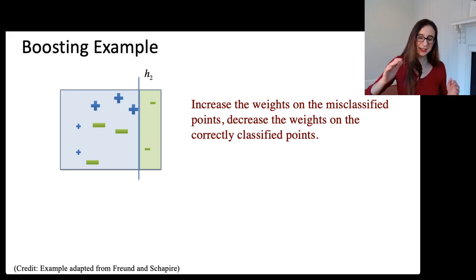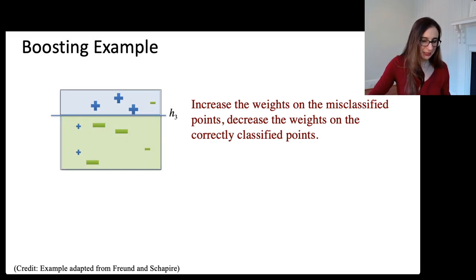So then, we again, decrease the weights on all the points we got correct, increase the weights on the incorrectly classified points, and then keep repeating this over and over until we decide we're done. So here, this classifier did really well. The only points it missed had very low weights, and so its alpha got to be really large.